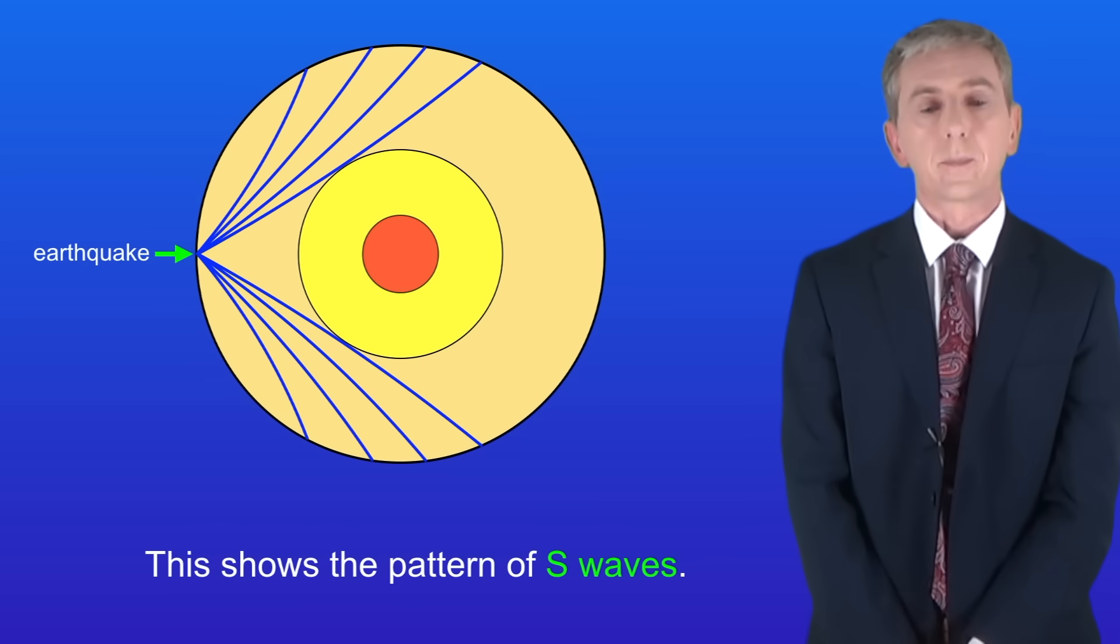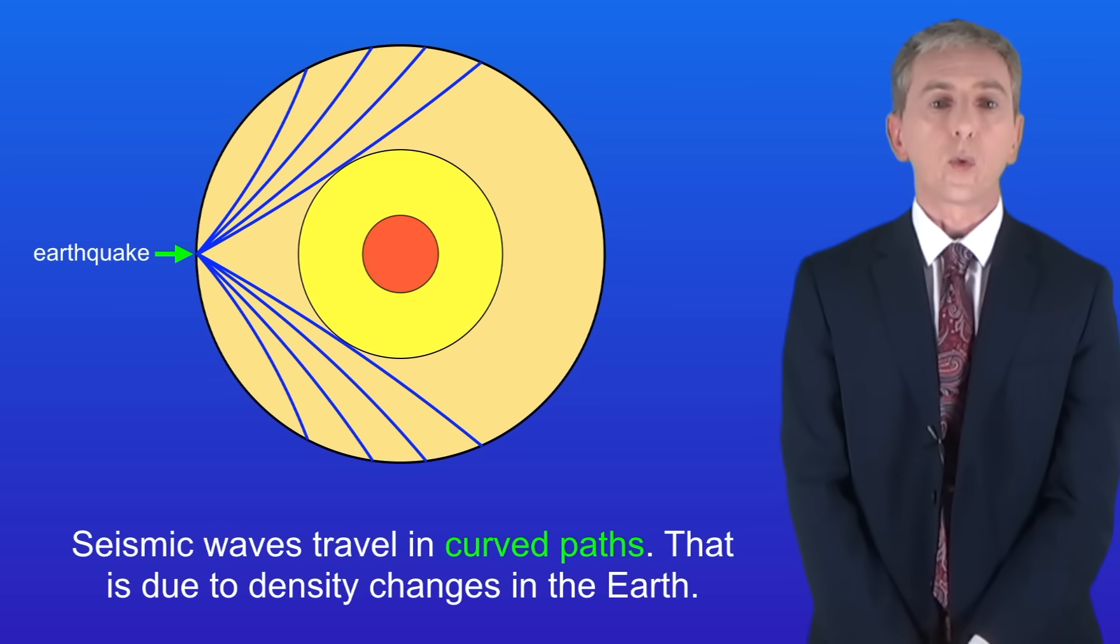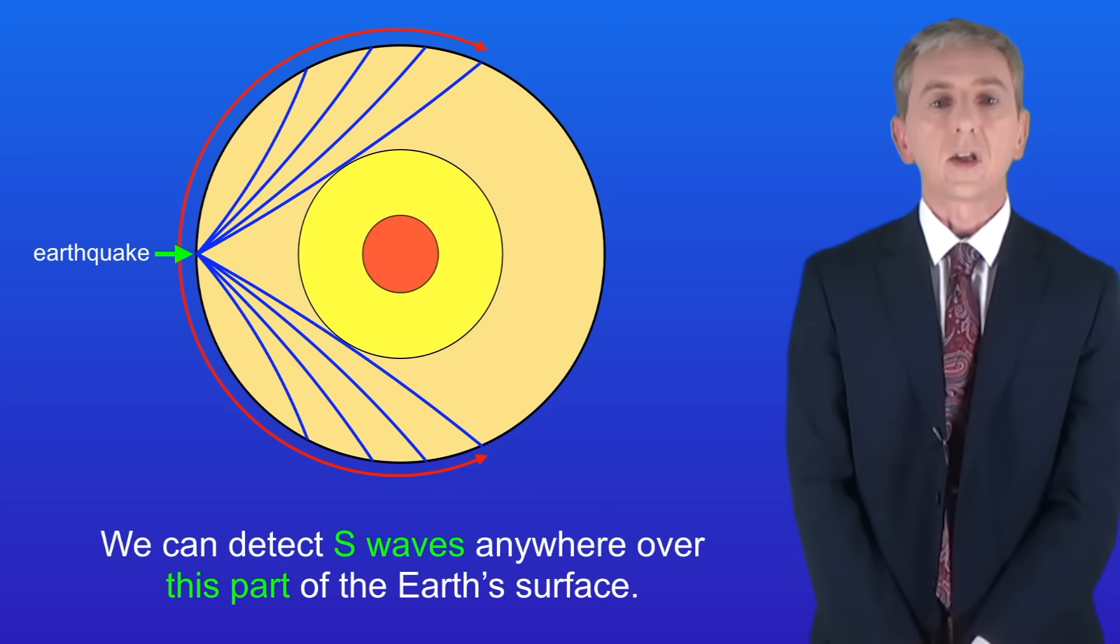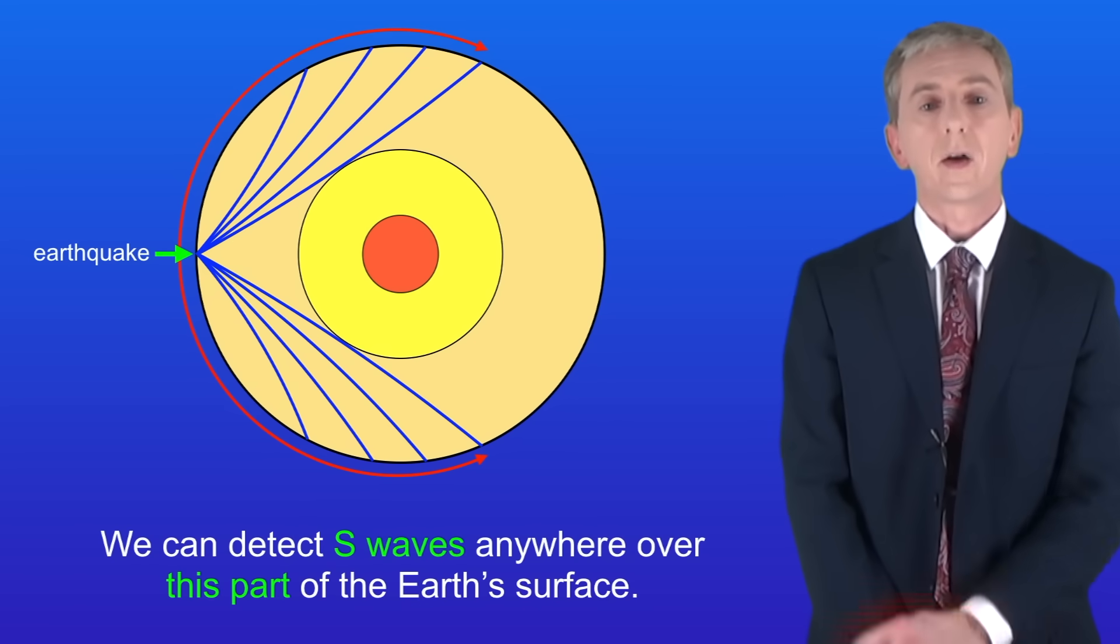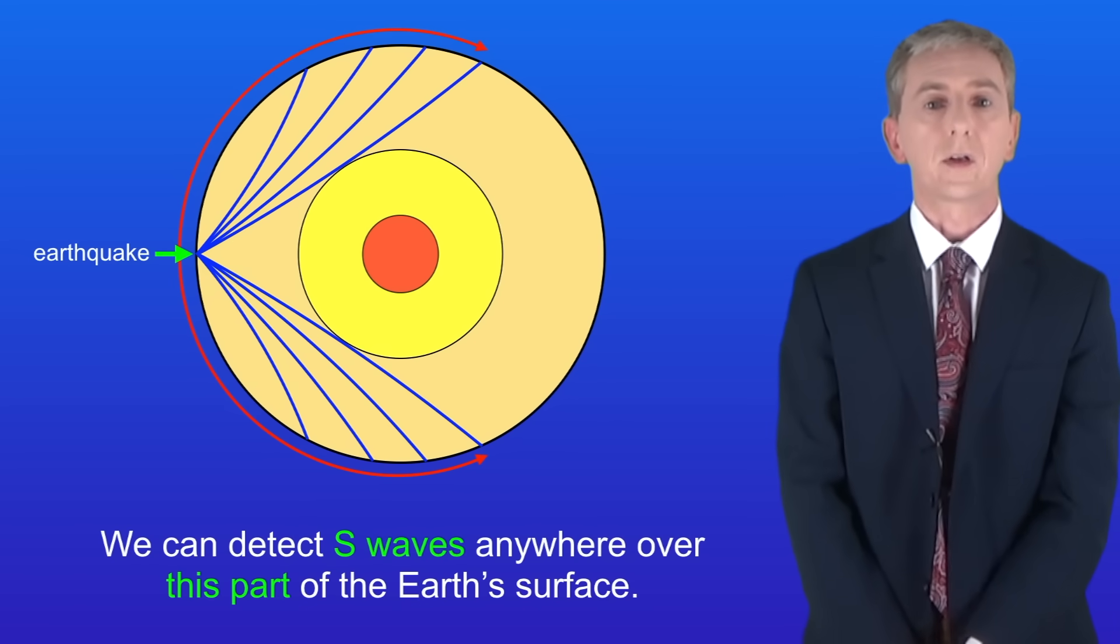I'm showing you the S waves here. You'll notice that seismic waves travel in curved paths and that's due to density changes in the earth. As you can see we can detect S waves anywhere over this part of the earth's surface.